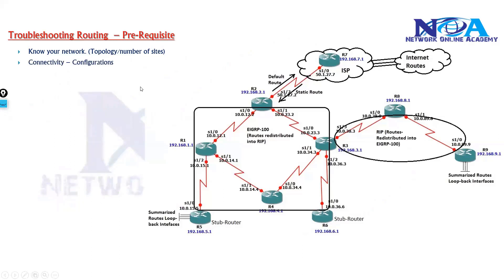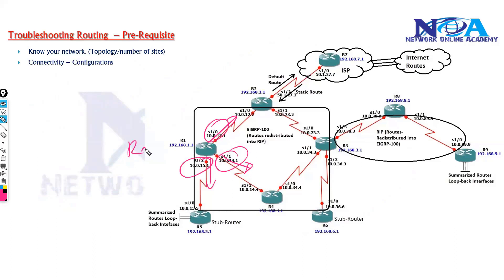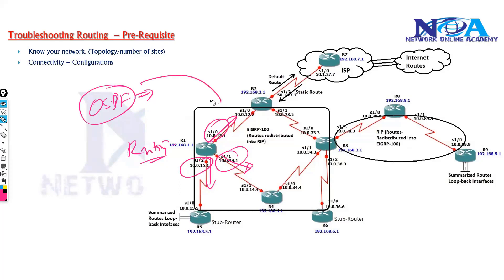The next prerequisite is knowing the connectivity configurations — which interfaces go to which side, what IP addressing is used, and what routing protocol is being used to provide reachability. For example, if you are using OSPF, you need to be well aware of the OSPF protocol, its behavior, how it works, and how it behaves in different scenarios. These are all things you learn in the technology part.